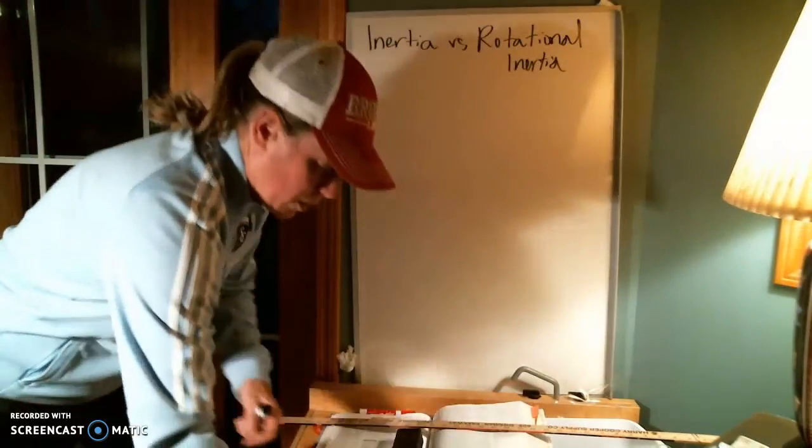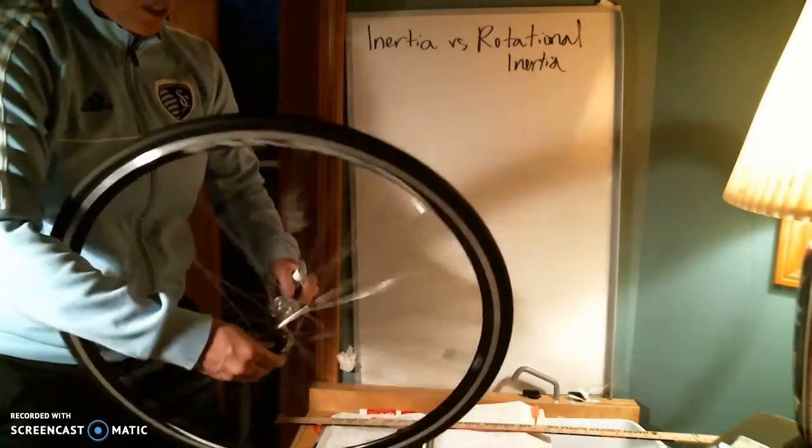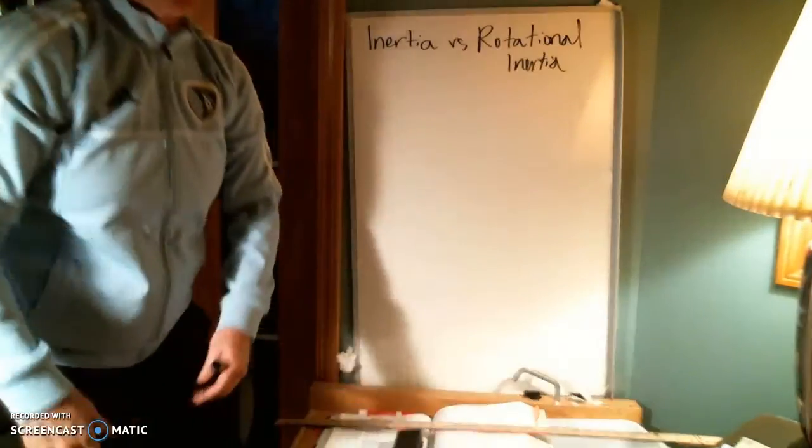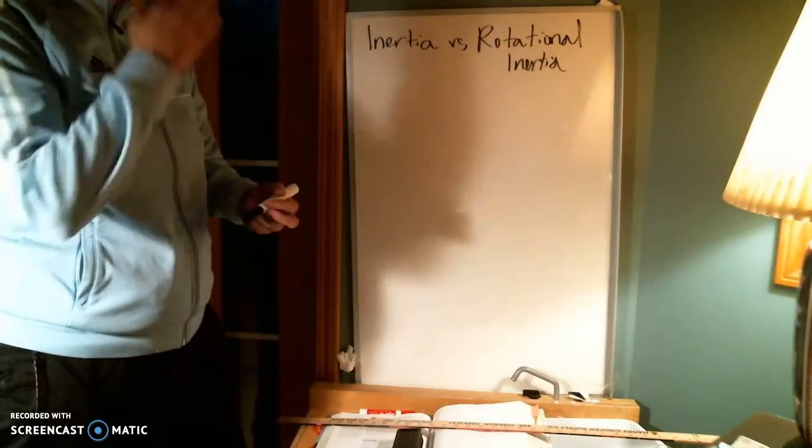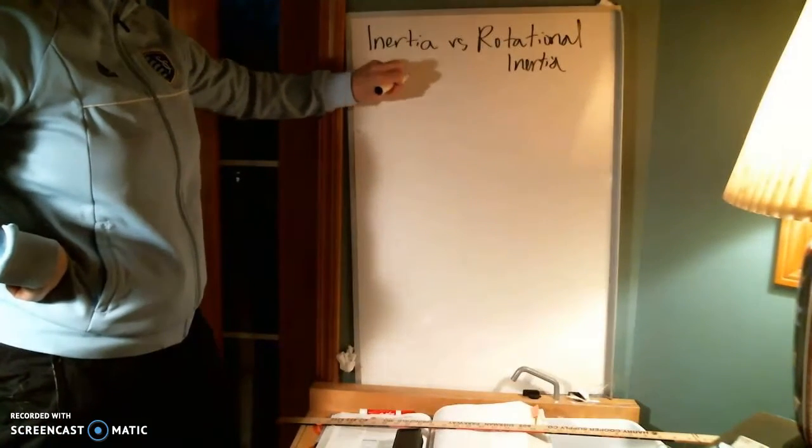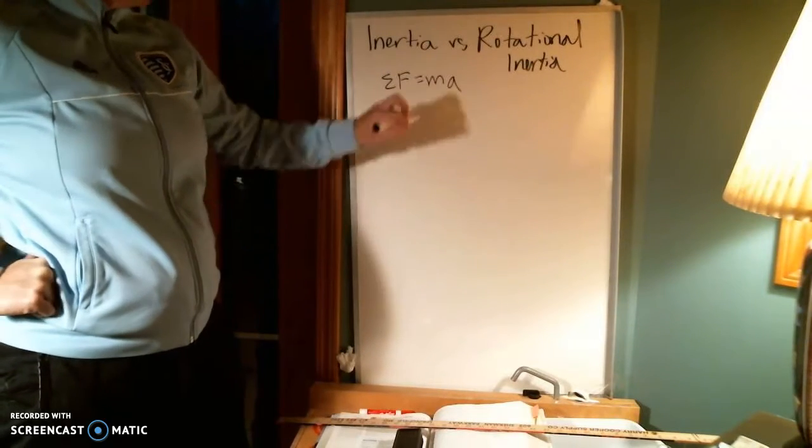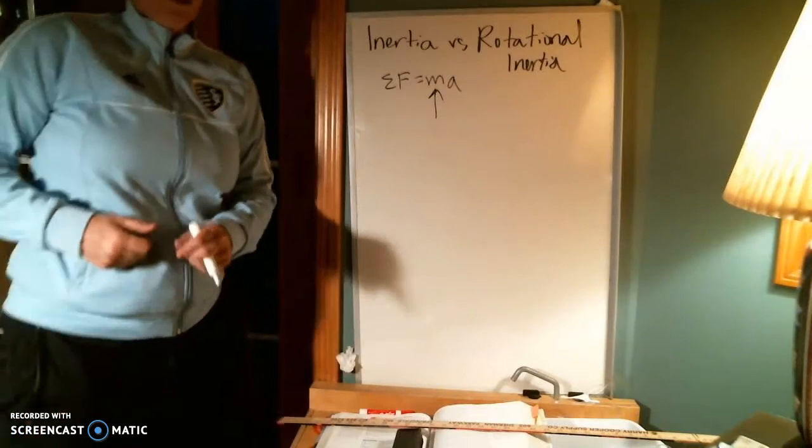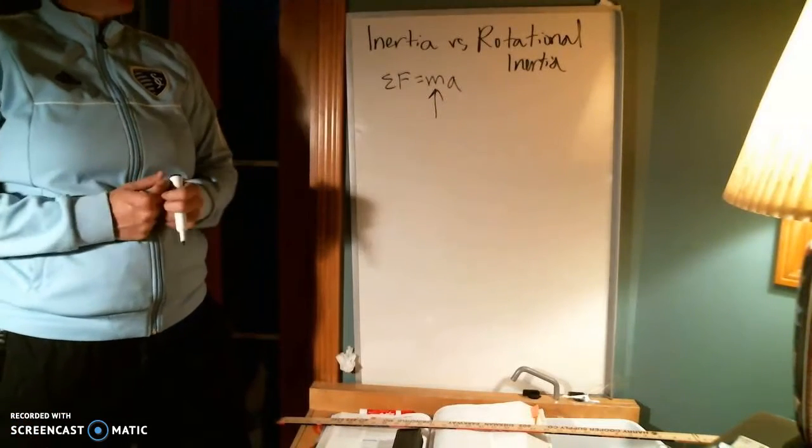When I apply a torque to a wheel, I get angular acceleration. If I apply a force to a mass, or a net force to a mass, I get linear acceleration. So, based on this, my net force equals mass times acceleration. This quantity right here represented the inertia. And what is inertia, right? That's that resistance to change.